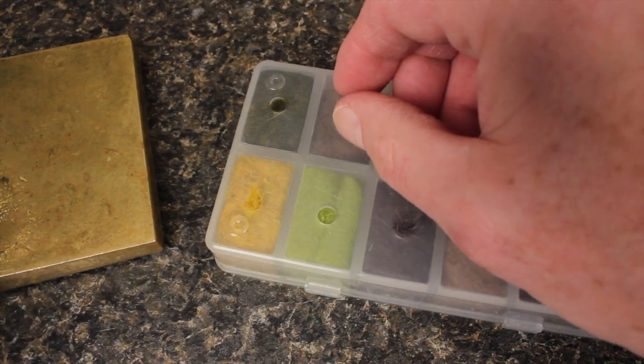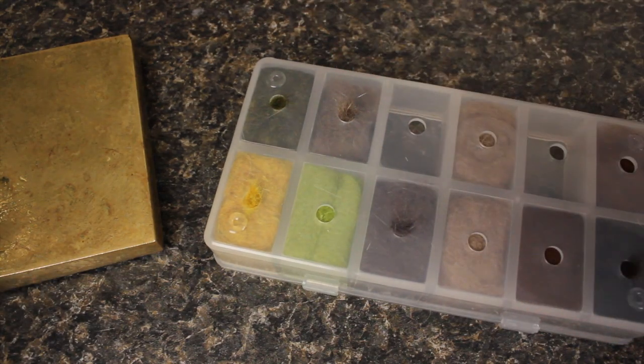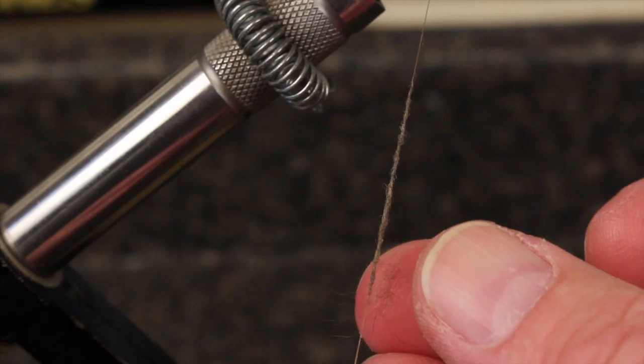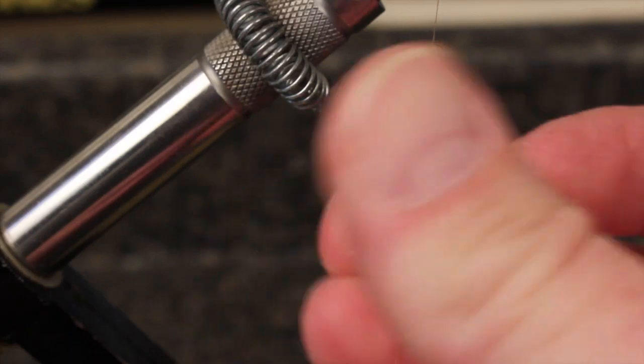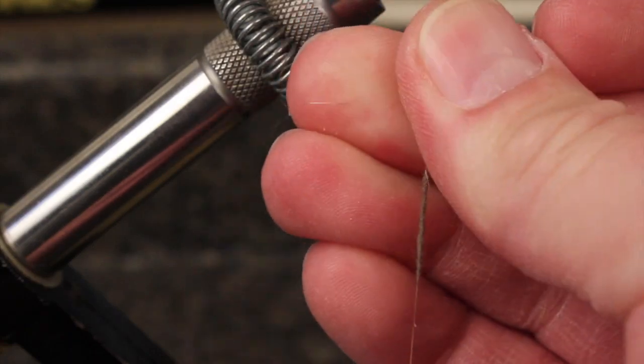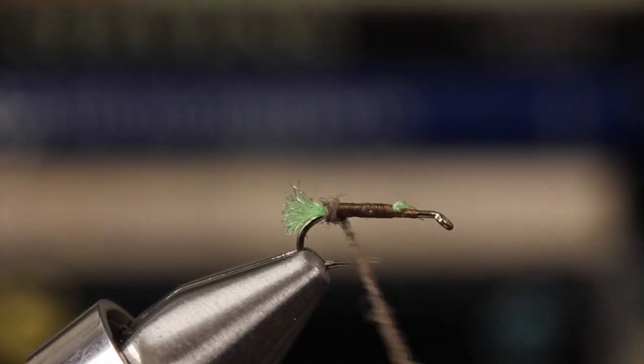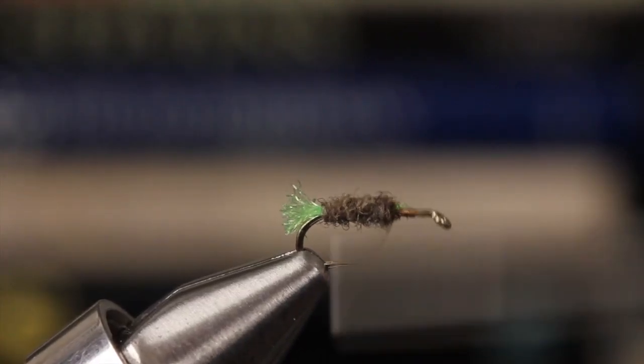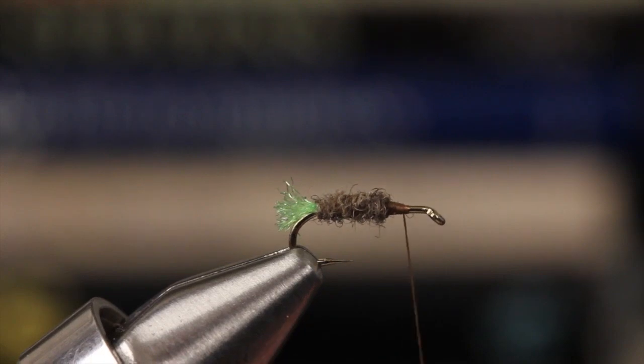For the abdomen, Matt uses natural gray Australian possum fur. Because you've built up an underbody, create only a thin dubbing noodle. The abdomen should end about two-thirds of the way up the hook shank.